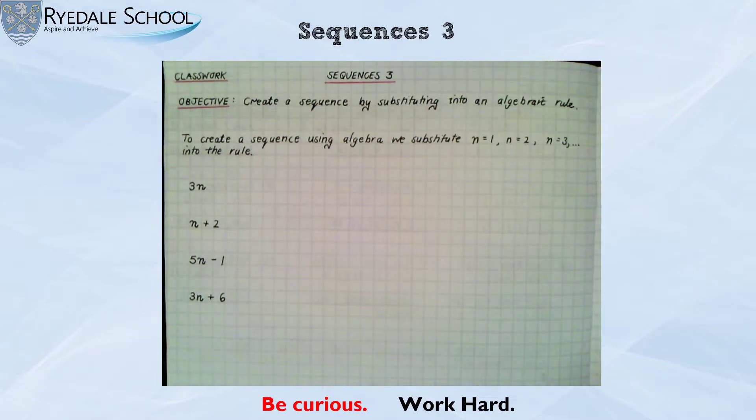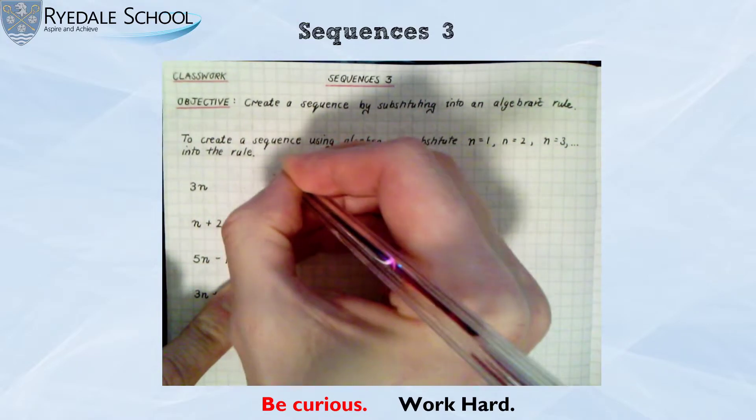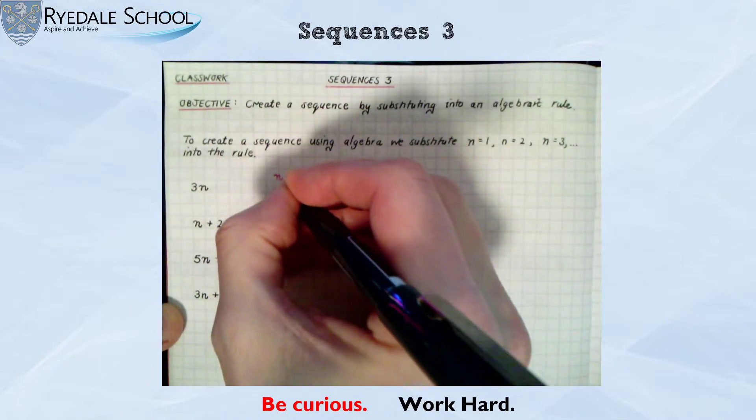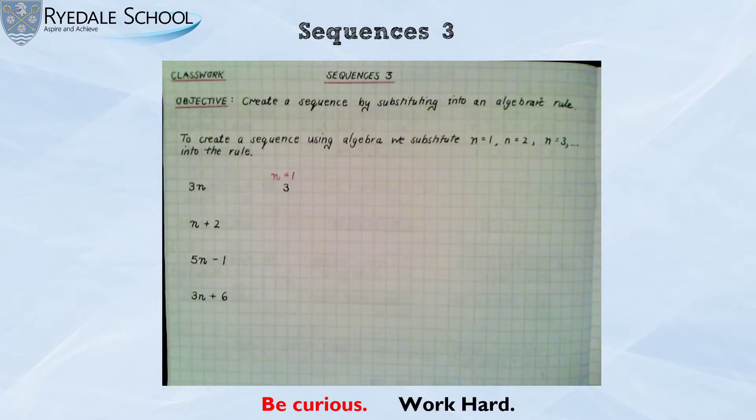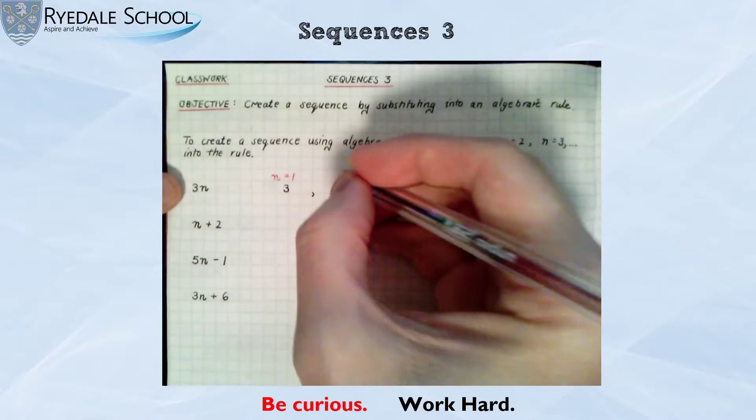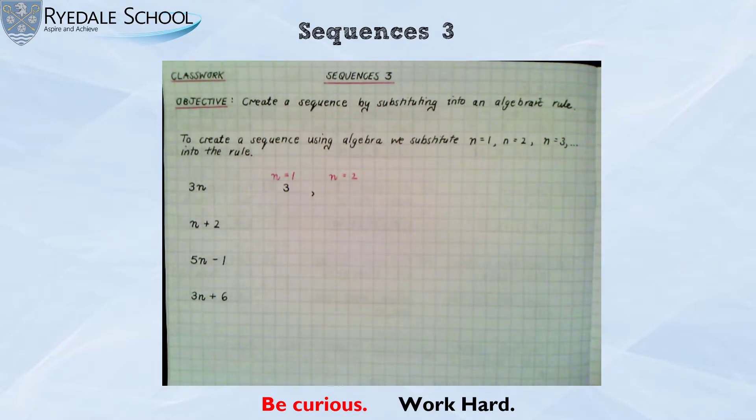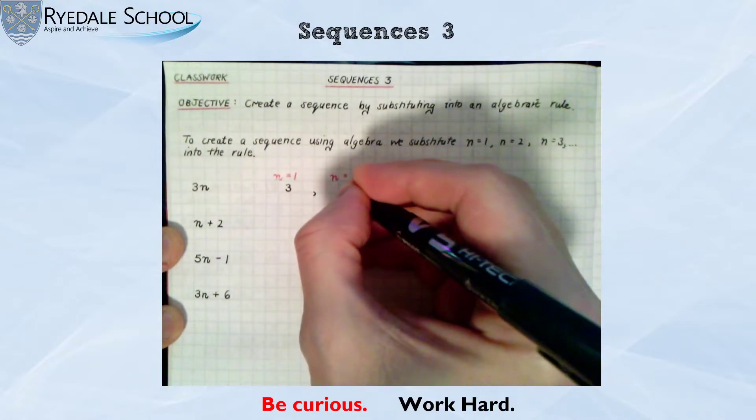Let's look at my first example which is 3n. Now we know in algebra 3n means n times 3 or 3 times n. So if I want the first term in this sequence I'm substituting n is 1. So I need to do 3 times n or 3 times 1. So that is just 3. That would be my first term. If I want the second term I'm substituting n is 2. So I need to do 3 times 2. 3 times 2 being 6.